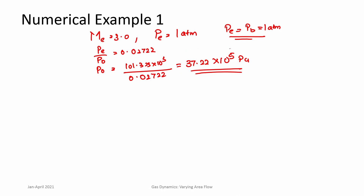We already know the tunnel starts operating at 70 × 10⁵ Pascal, which is nearly double 37.22 × 10⁵ Pascal. So there is a long time to go before we get to this threshold; once it falls below this value, oblique shocks will occur.